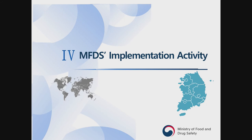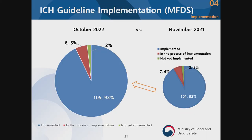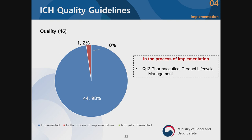What activities are we doing for the implementation of ICH guidelines in Korea? From 2017 to now, we have reflected the ICH guidelines into the Korean regulatory guidelines — about 105 guidelines now reflect the ICH guidelines. Last year's figure was 101, so we have increased by four guidelines reflected into Korean regulations.